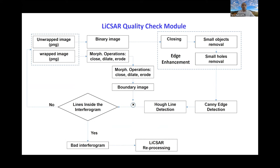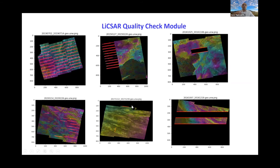The first step is mainly based on morphological image processing techniques to identify artifacts in the interferograms. We use both wrapped and unwrapped images as input, and after an image enhancement step, the algorithm checks for lines using a Canny edge detector followed by a Hough line detection. If lines are detected, the interferogram is flagged as a bad interferogram and will go for reprocessing. We tested this algorithm over many different interferograms and tried to improve it over time as we accumulated more training samples, achieving good performance.